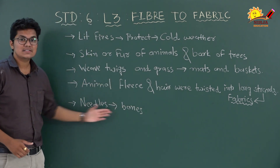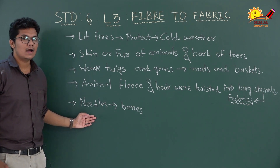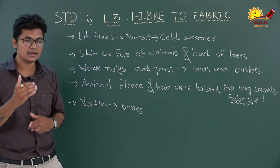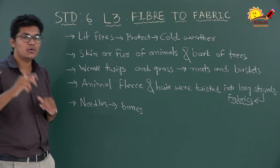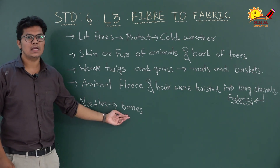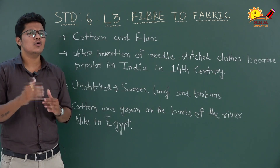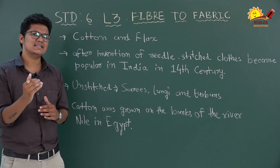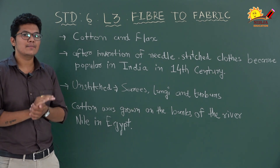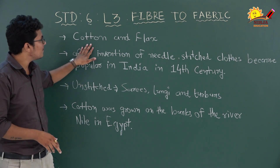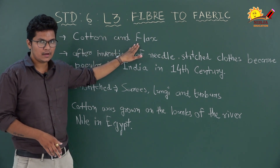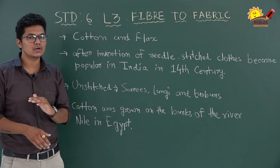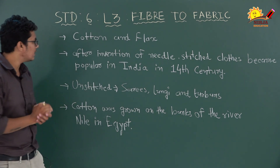They used bones as needles to weave. In ancient times, animal bones were used for weaving. Then, over time, they discovered that certain plant parts could also be used to make fabric — for example, cotton and flax — and they started making fabric from cotton and flax plants.